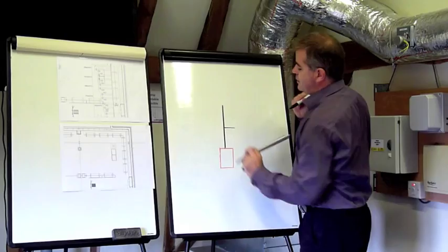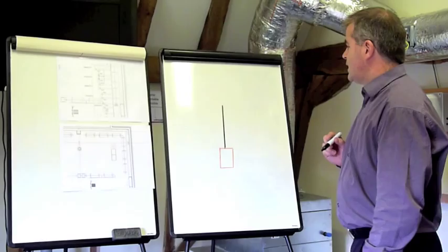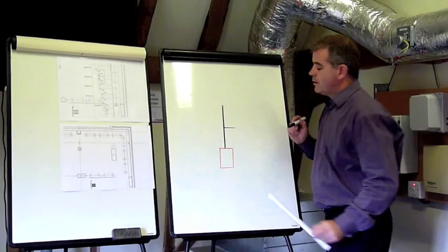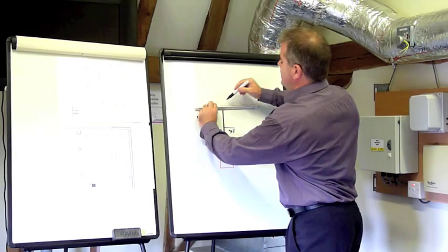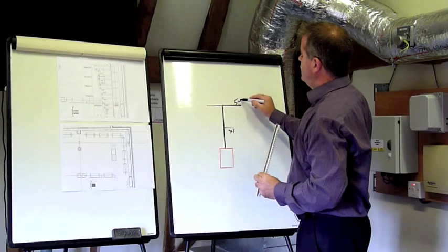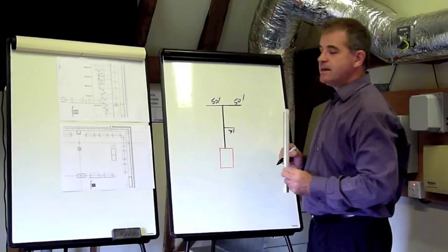Now T's and elbows - couple of things to bear in mind. If we put a branch on here, on a branch T, maximum 30% of the air outlets - not 30% of the length of duct, 30% of the air outlets. If we go into a T up here, then we want 50-50, 60-40 is fine as well, but as near to 50-50 as we possibly can. Again we're talking about 50% of the air outlets at this point.